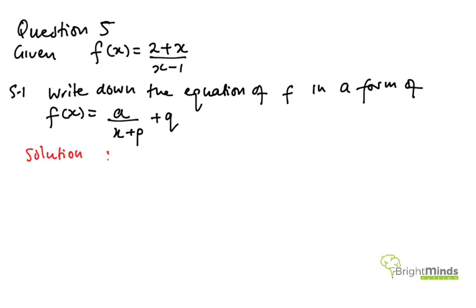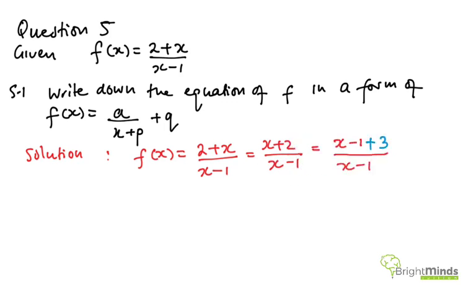So what I have to do is, I can rewrite my question differently as x plus 2 all over x minus 1. And then the top, I need to rewrite it such that it contains x minus 1. So if I do that, I will get something like that. You can see there I have just put plus 3 because minus 1 plus 3 is the same thing as positive 2.